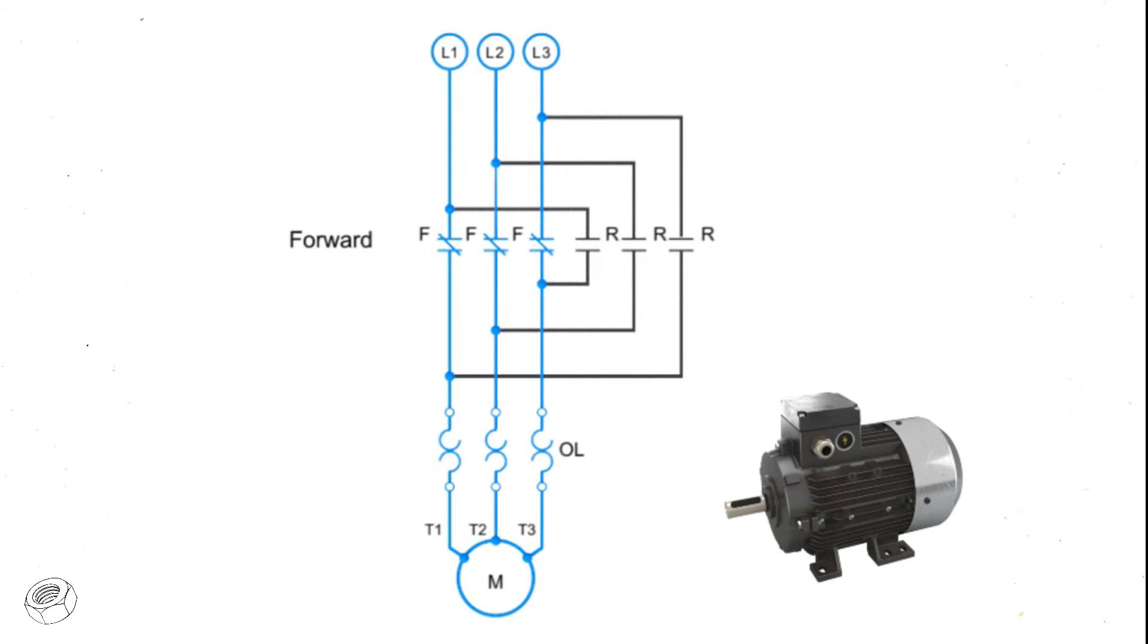When the motor is running in forward, the circuitry contacts are connected in numerical sequence. L1 to T1, L2 to T2, and L3 to T3.